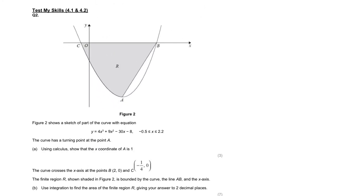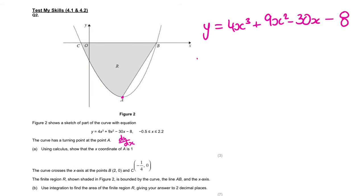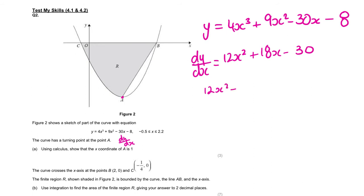Question number 2. Figure 2 shows the sketch of part of the curve with this equation. The curve has a turning point at A — if it has a turning point at A, that means the gradient equals 0. So when it says use calculus to find the x-coordinate of A, it wants us to differentiate. We know that y equals 4x³ + 9x² − 30x − 8, so dy/dx equals 12x² + 18x − 30. Setting this equal to 0, we get x equals 1 and x equals minus 5 over 2.